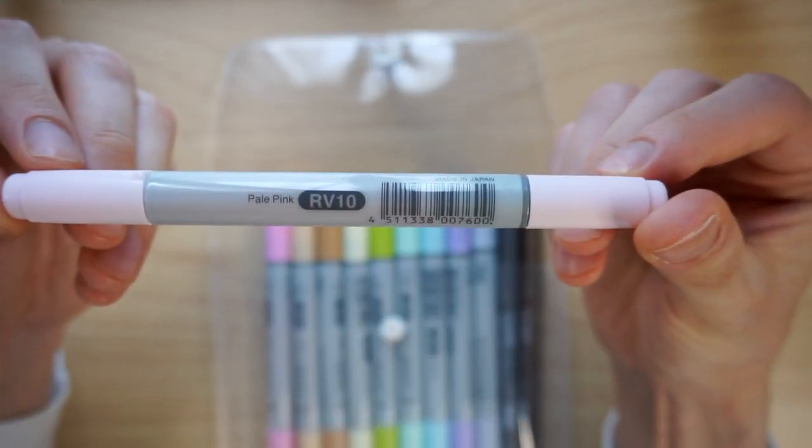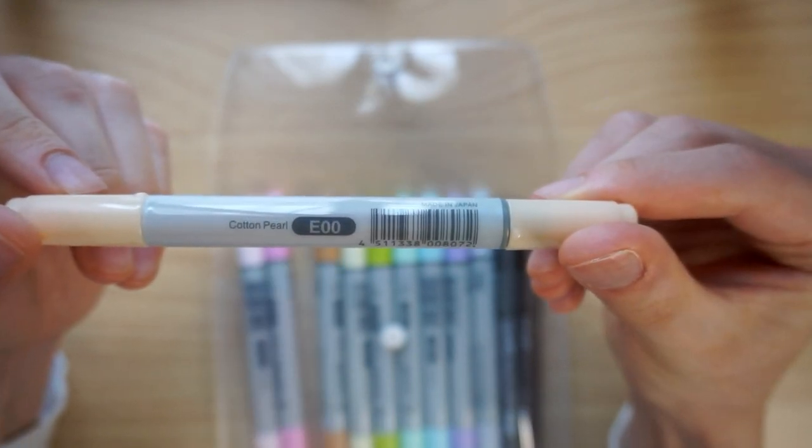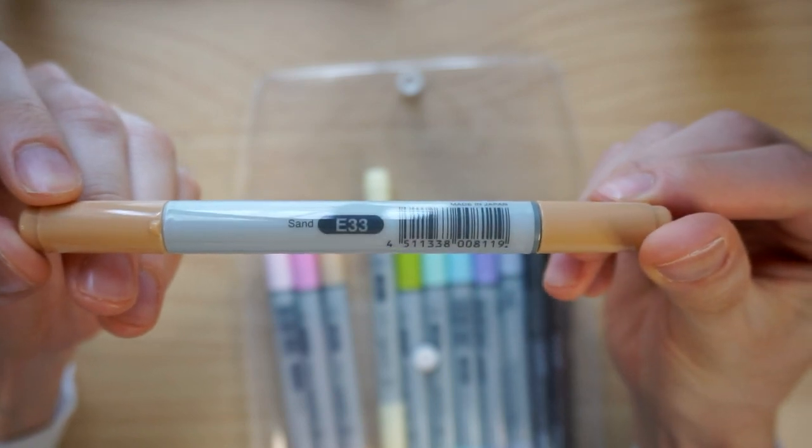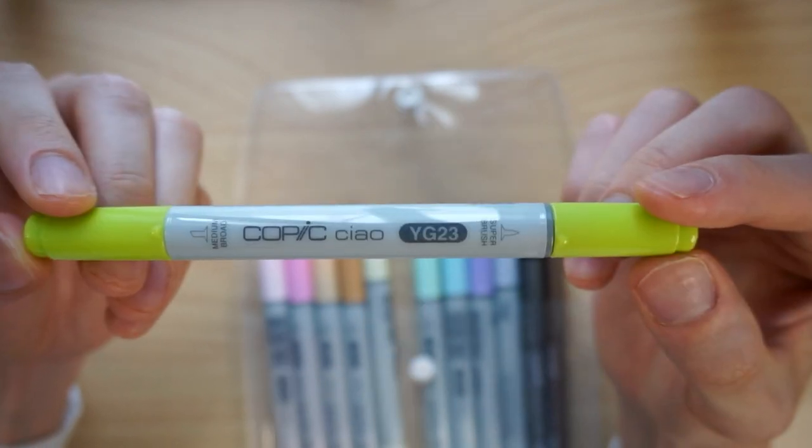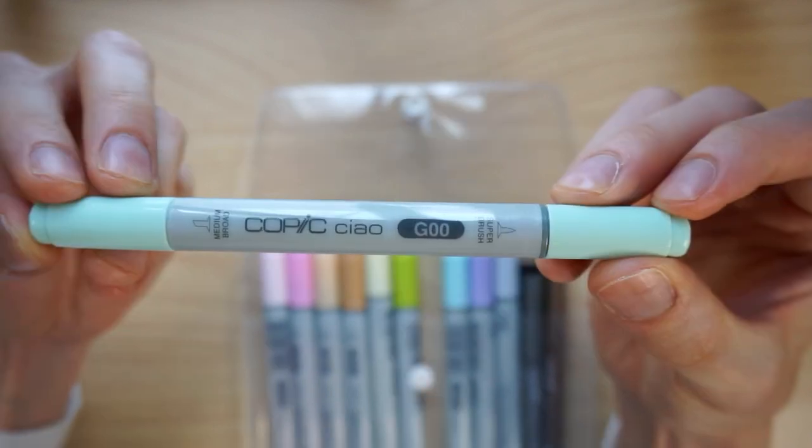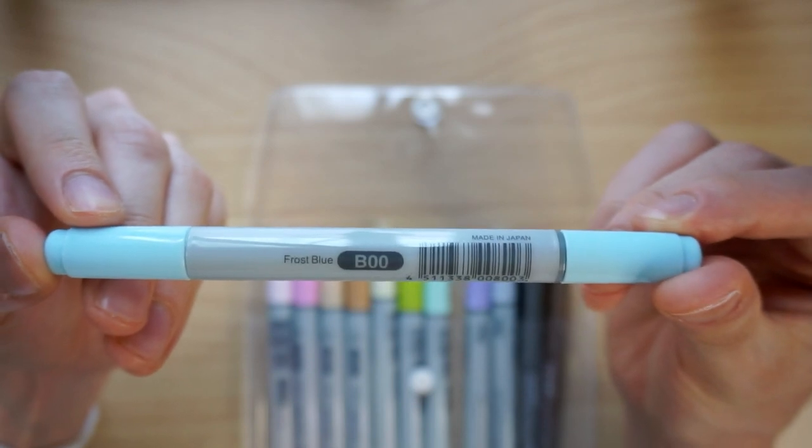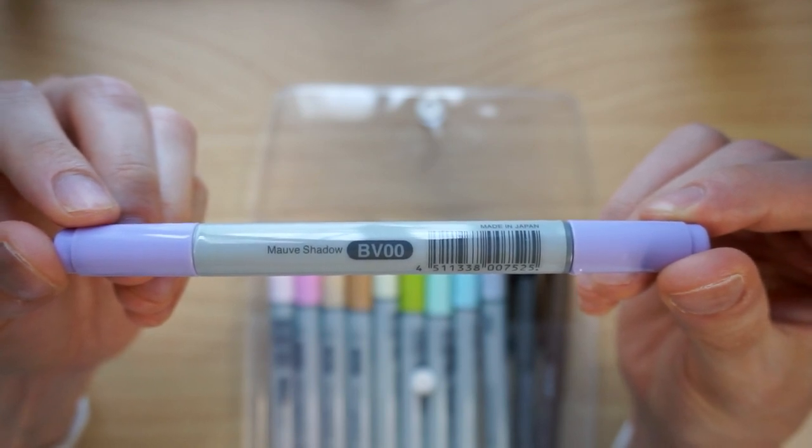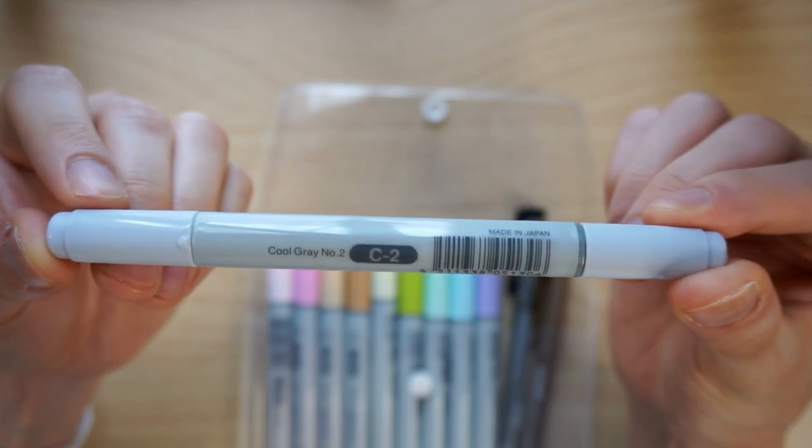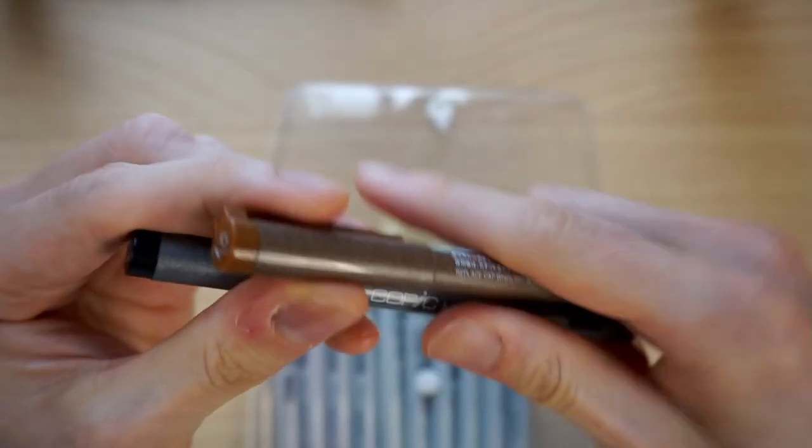Let's have a look at all of the pens that come in this set. This is RV10, pale pink. RV02, sugared almond pink. E00, cotton pearl. This is E33, sand, which I hate, gets everywhere. This is Y00, barium yellow. YG23, new leaf green. G00, jade green. B00, frost blue. BV00, mauve shadow. And C2, cool grey number two. And this pen's special because it's got a favorite restaurant, pizza hut. And then finally at the end, you've got two of these multiliners, a black and a sepia.